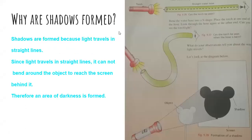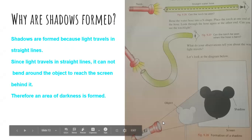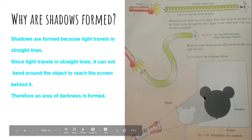Now why are shadows formed? Shadows are formed because light travels in straight lines. For example, this is an object which is blocking the light, and that is why a darker region — a shadow — is basically formed. Light travels in a straight line; it did not bend.